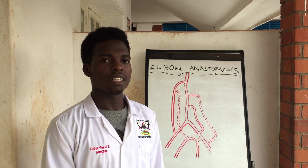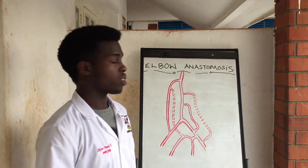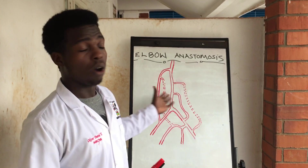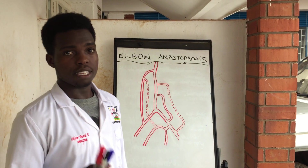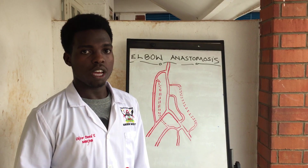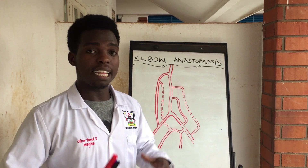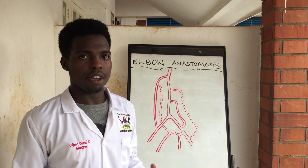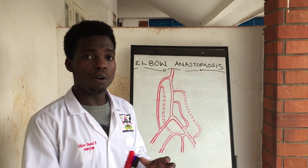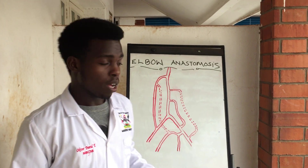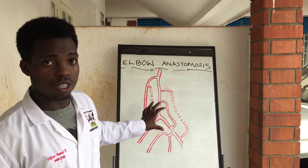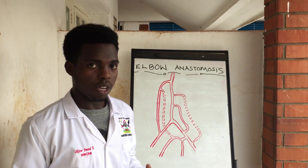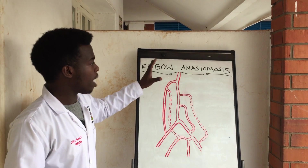Hello everyone, welcome to We Learn A Duke. Don't forget to like and subscribe. Today I'm going to look at the elbow anastomosis. Anastomosis is just an alternative pathway that is taken by tubularies to attack supply an area. Anastomosis can be found in different areas of the body — we're going to look at the elbow anastomosis, the scapula anastomosis, and other parts.